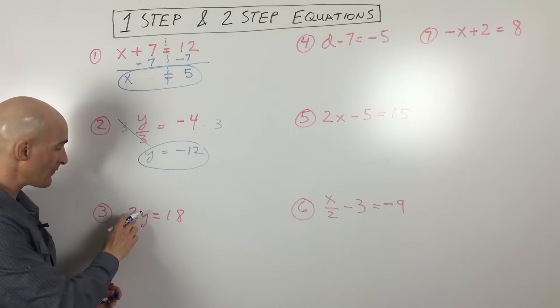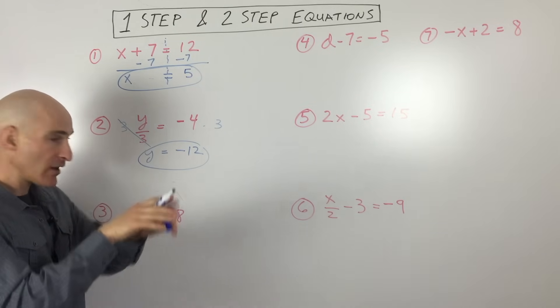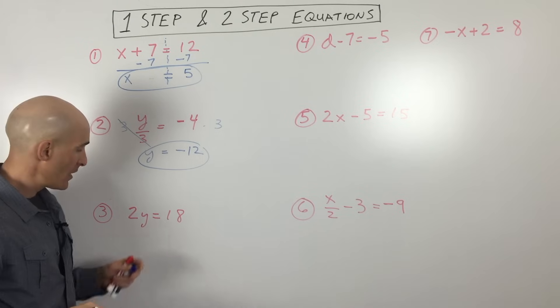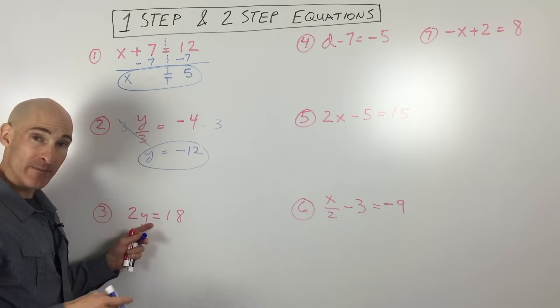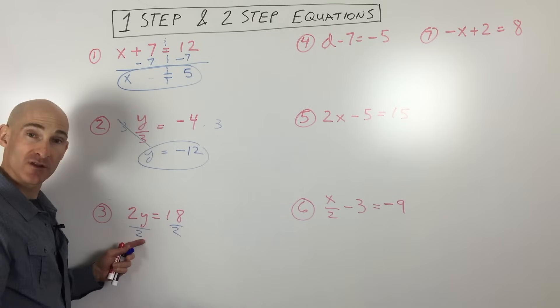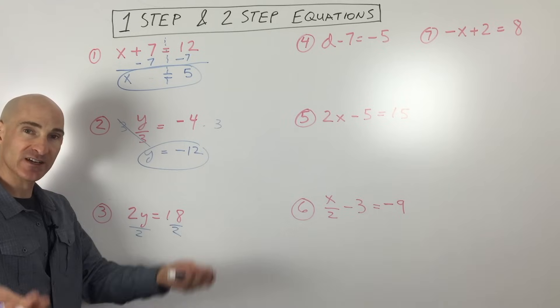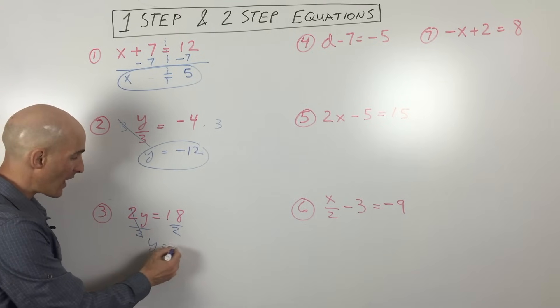Next example, we have 2 times y. Now, they're right next to each other without anything in between, so we know that they're multiplied together. We want to get the y by itself. So we say, what's the opposite of multiplying by 2? Dividing by 2. Whatever we do to the left, we want to do to the right to keep it balanced like a teeter-totter. These are going to cancel out, and we get y equals 9.